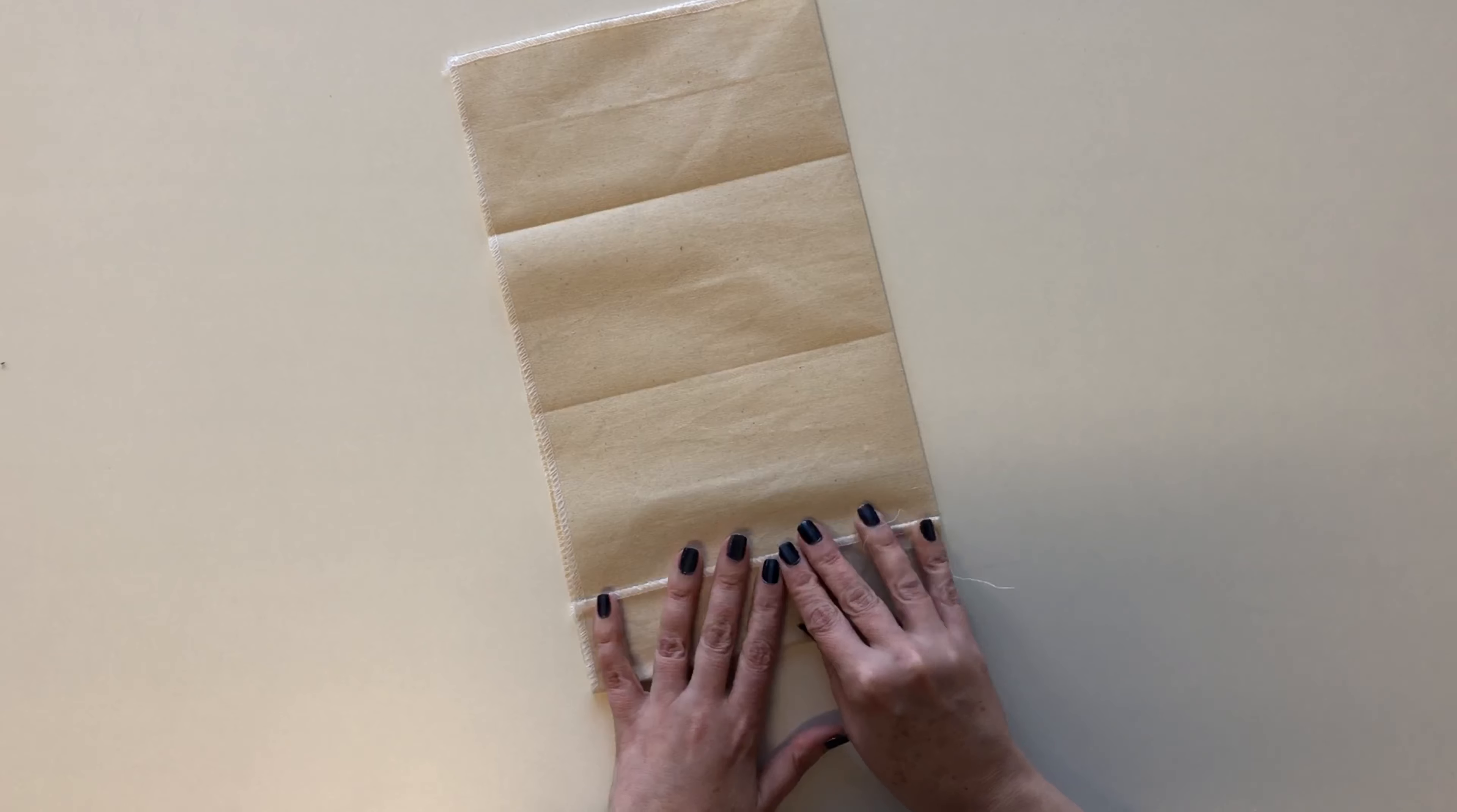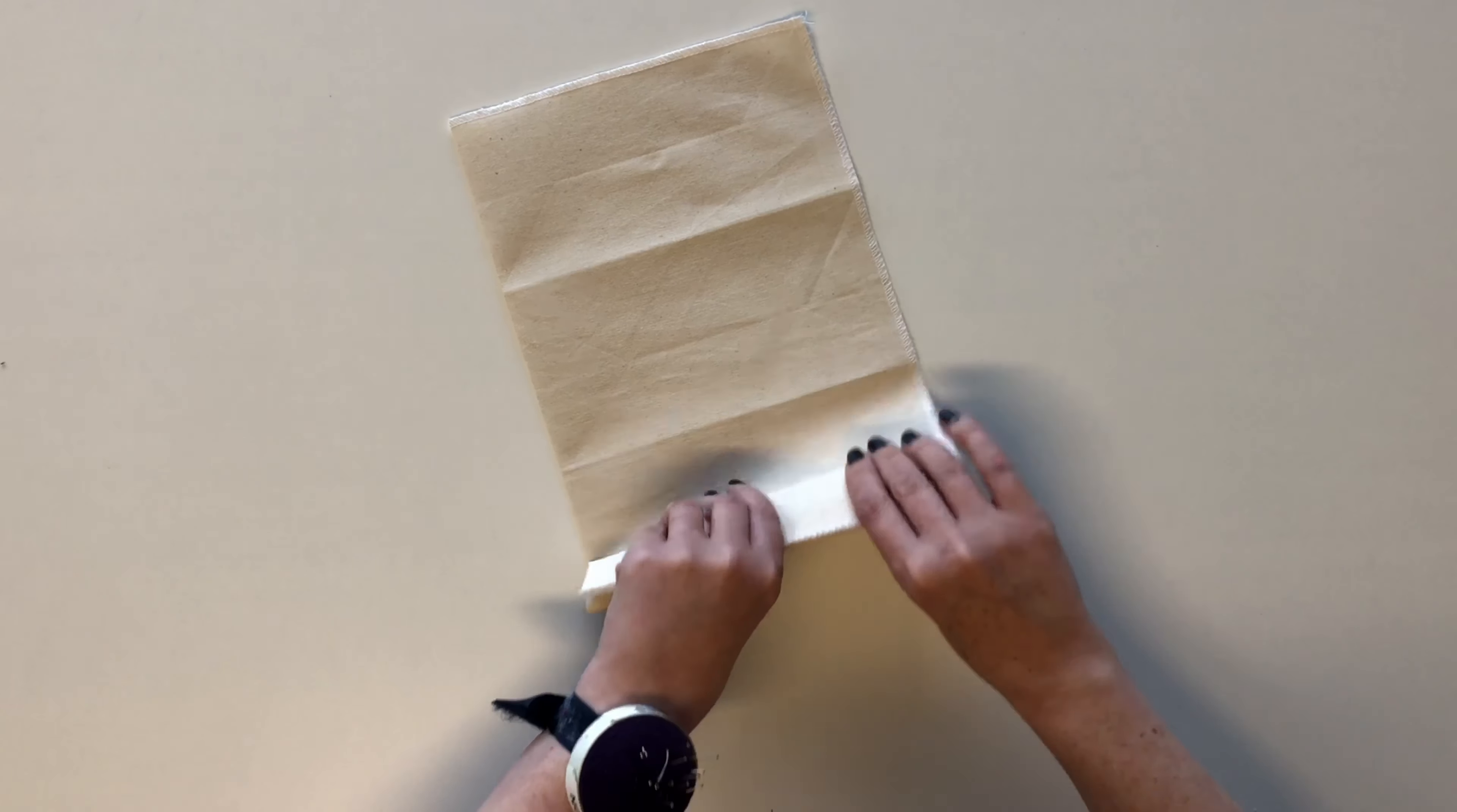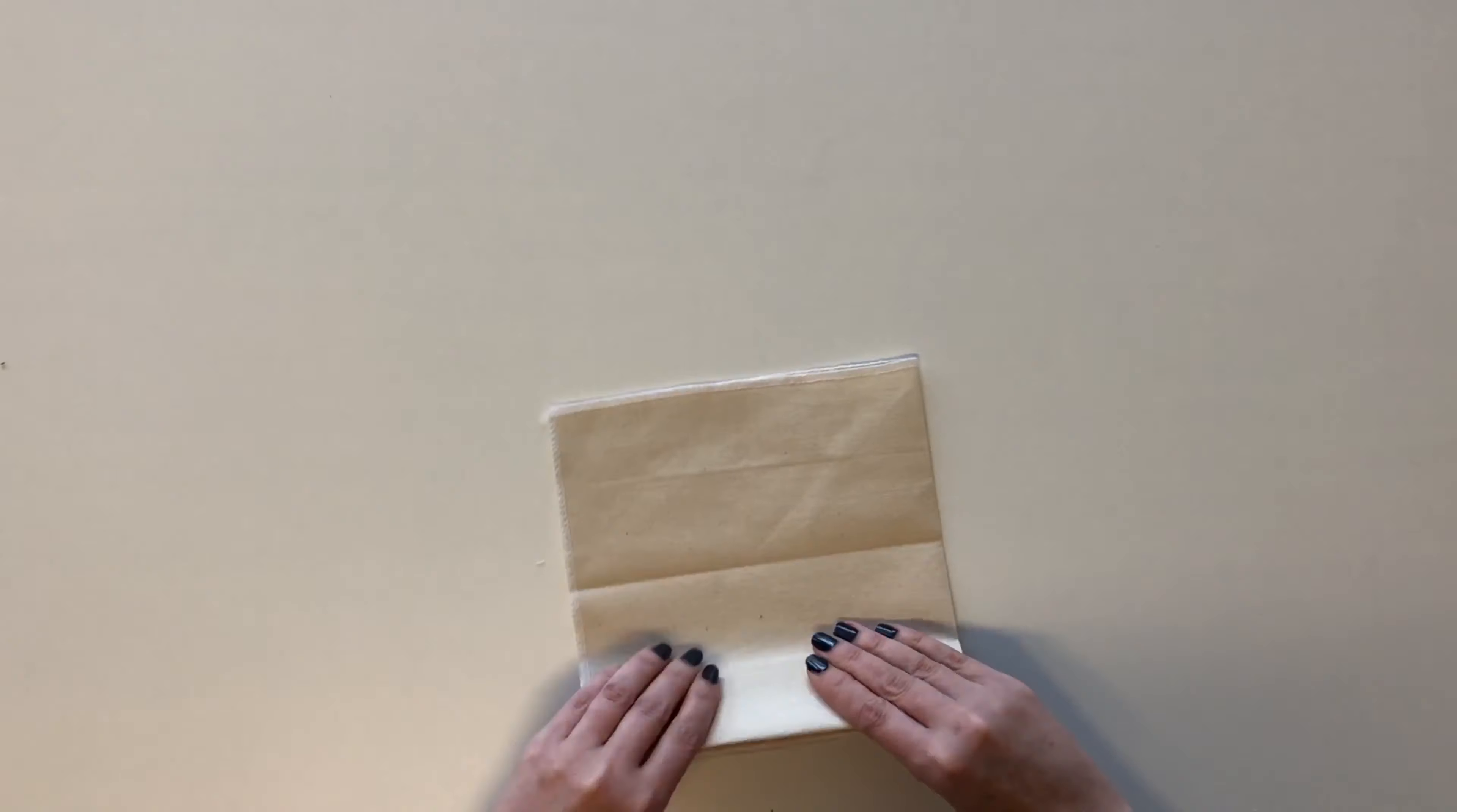Now you've done that you're going to concertina the folds so one on top of the other. So fold it on that side, fold it again making sure that each section you're doing is exactly the same size so it'll be half of the guideline that you put in last time. So fold it up and then keep going until you get to the top.